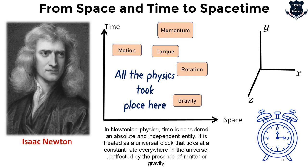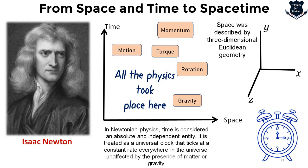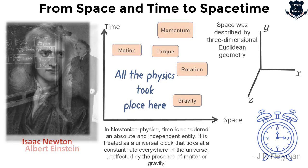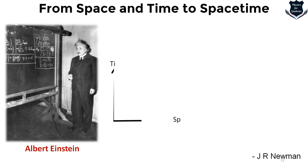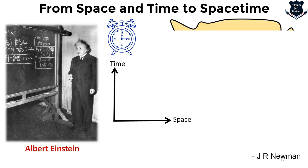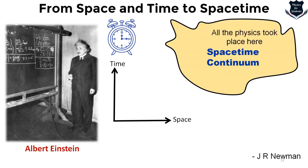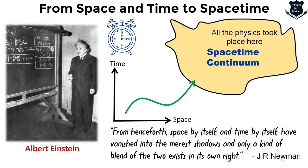As put forward by J.R. Newman: 'From henceforth, space by itself and time by itself have vanished into the merest shadows, and only a kind of blend of the two exists in its own right.' That is, it has vanished from Newtonian mechanics and has been united into one specific continuum — the space-time continuum.